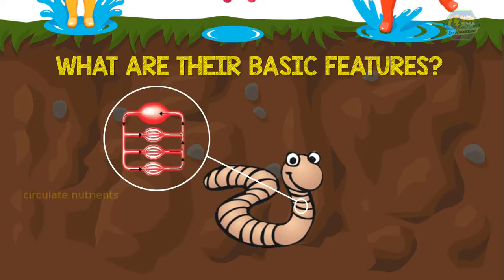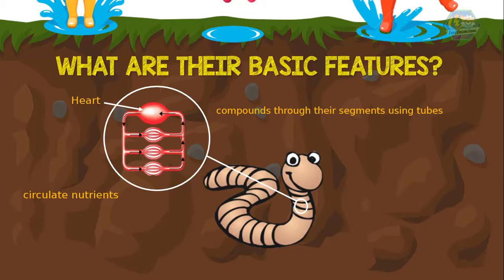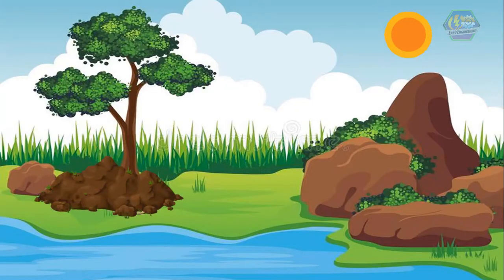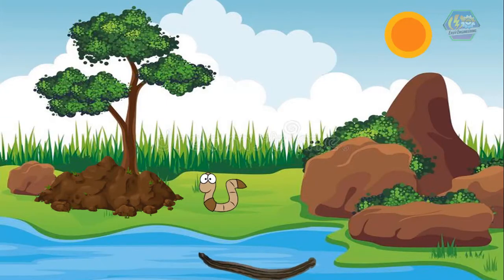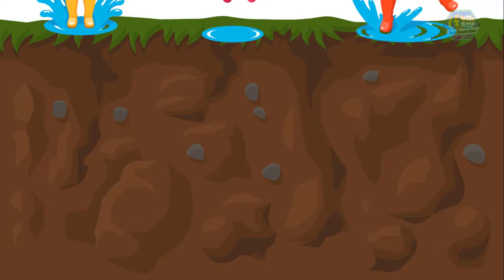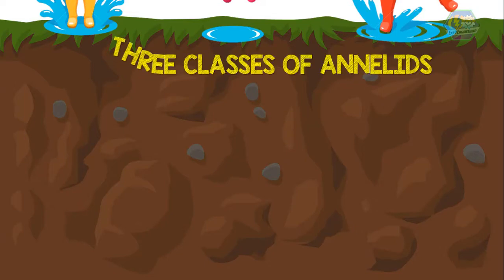They also have a closed circulatory system — they circulate nutrients and compounds through their segments using tubes, and they have a heart too. Some of them live in the soil and sediments, others live around water. Usually they are small, like 20 centimeters, but some could grow from as little as 1 mm up to as long as 3 meters — you might confuse them for a snake!